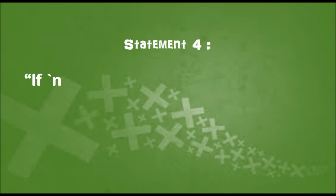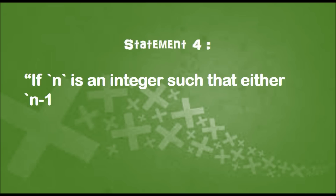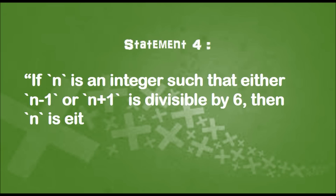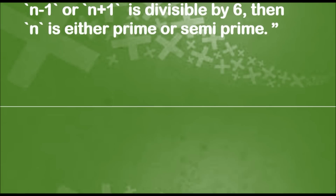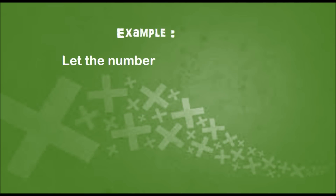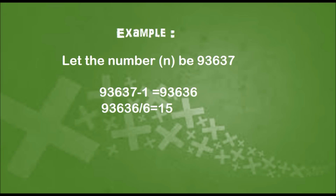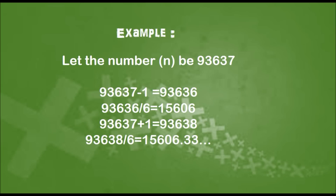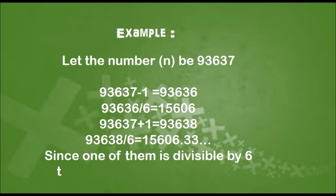Statement 4: If n is an integer such that either n minus 1 or n plus 1 is divisible by 6, then n is either a prime or a semi-prime. Example: Let the number n be 93637. Subtracting 1 from n and dividing the result by 6 gives a whole number. Adding 1 to n and dividing by 6 gives a decimal number. Since one of them is divisible by 6, n may be a prime.